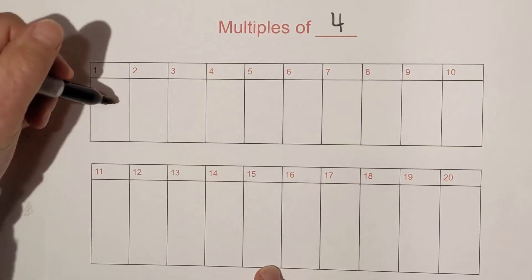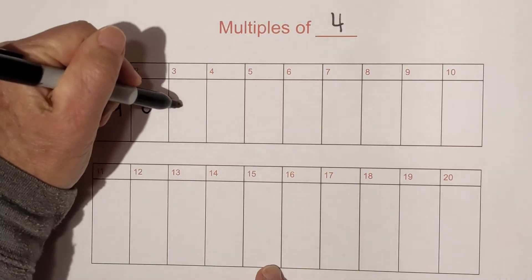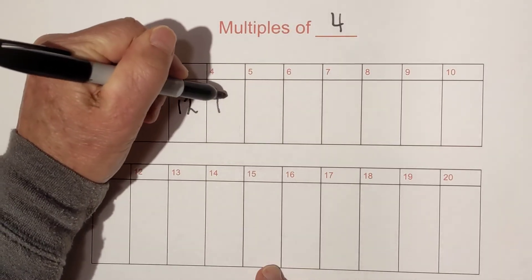So let's get started. So you have four, eight, two times four is eight. Then we have twelve, sixteen.